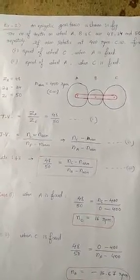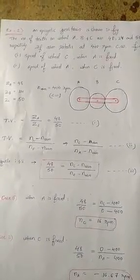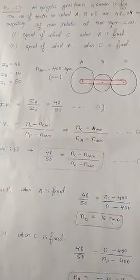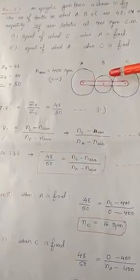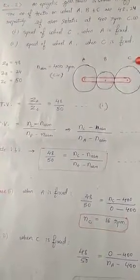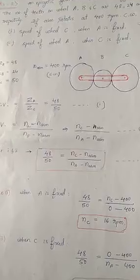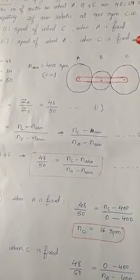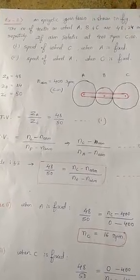We will discuss the second problem: finding the train value of an epicyclic gear train by the algebraic method. The question is: an epicyclic gear train is shown in the figure. The number of teeth on wheels A, B, and C are 48, 24, and 50 respectively. The arm rotates at 400 rpm clockwise. Find the speed of wheel C when A is fixed, and in the second case, find the speed of wheel A when C is fixed.